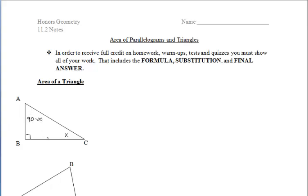Let's go ahead and prove why this would work. We know that we have one angle in the right triangle that's 90 degrees, which means the other two angles would have to add up to 90 degrees. So I'm going to call one angle x and the other angle 90 minus x. Once we duplicate the triangle, flip it and rotate it to create our rectangle, we then have a right angle at angle D.